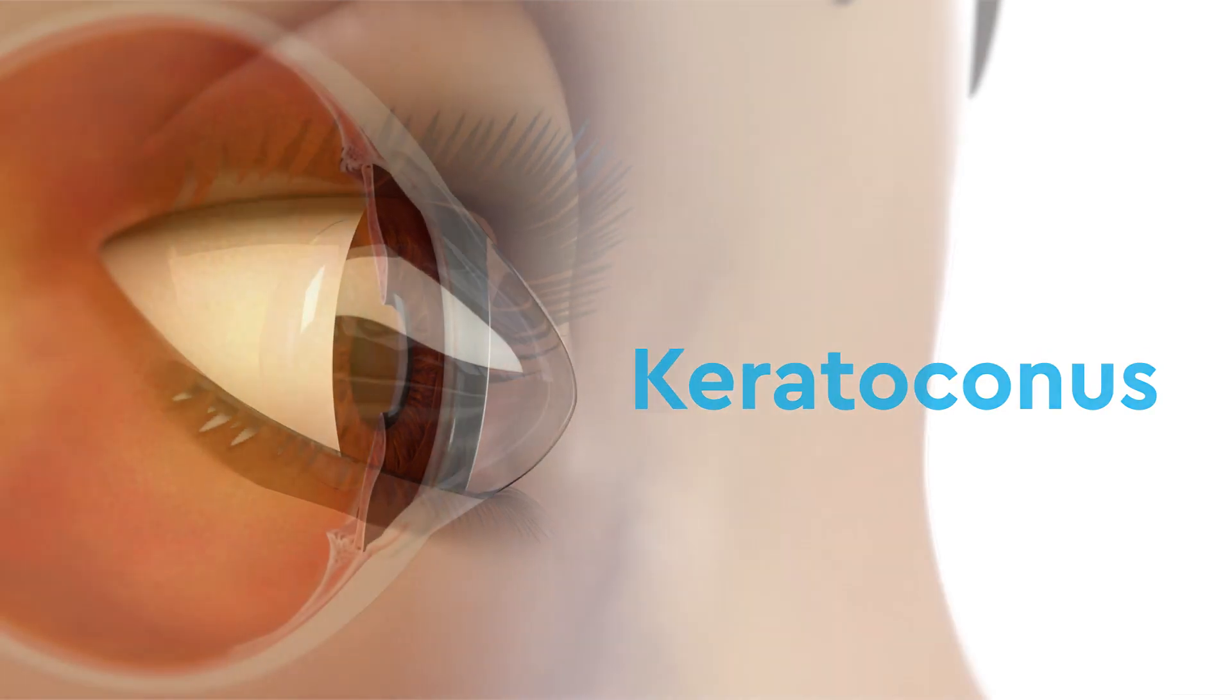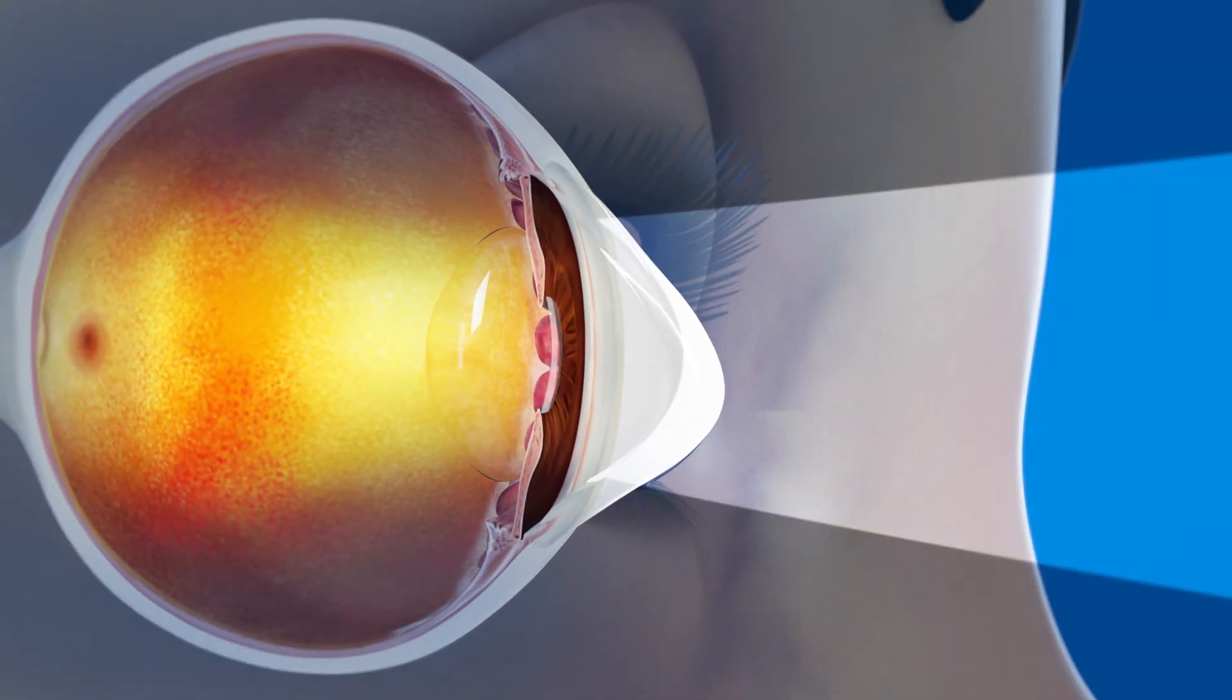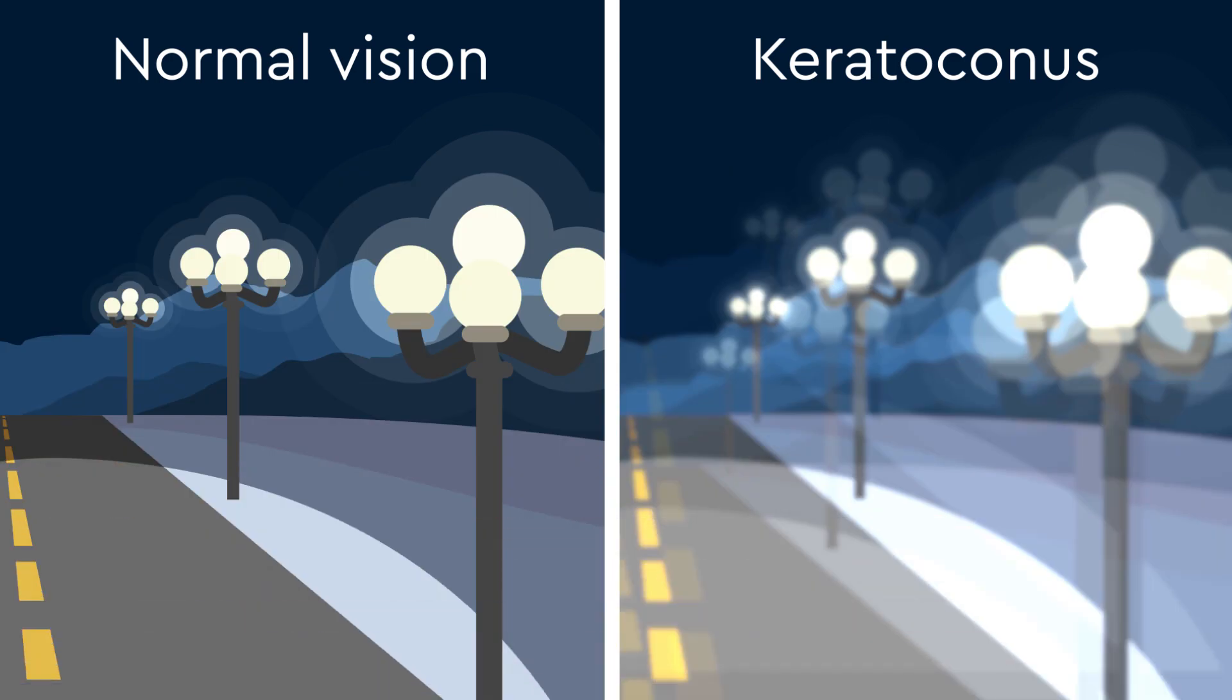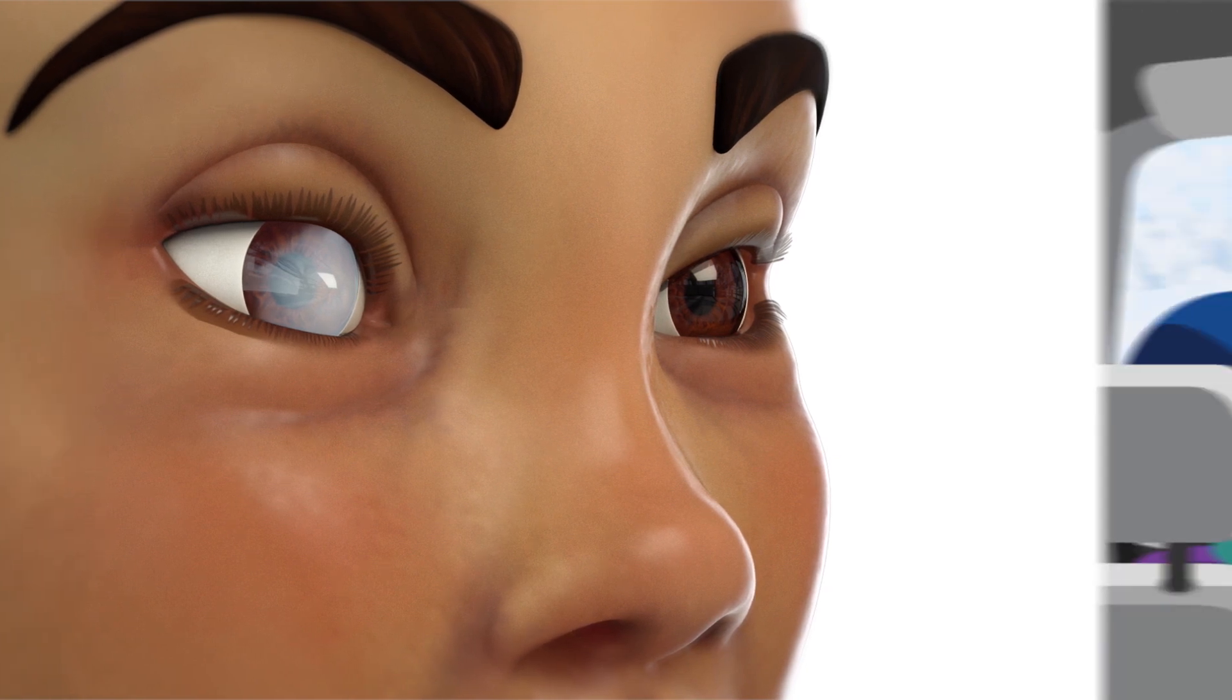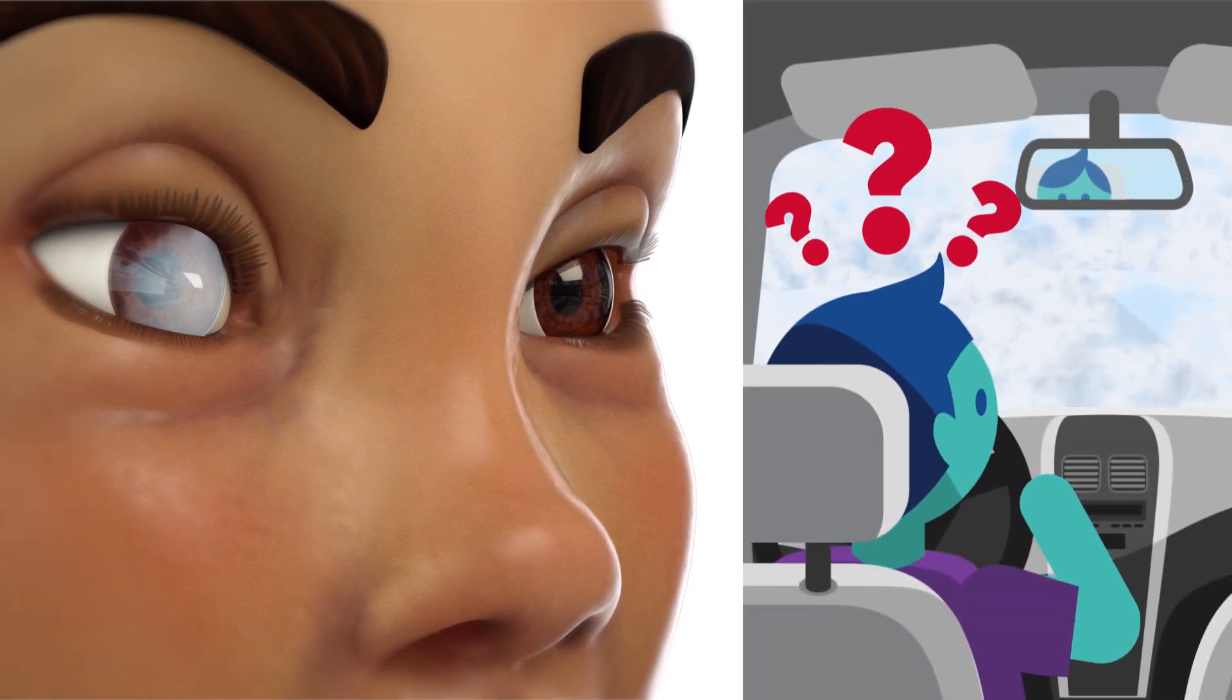When the cornea becomes distorted like this, light can't focus on the back of your eye, blurring your vision over time. In advanced cases, the cornea becomes cloudy, which would feel like trying to drive with snow on your windshield.